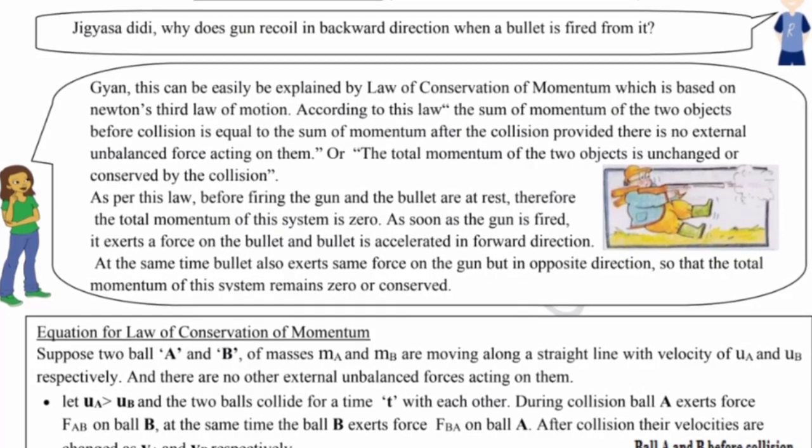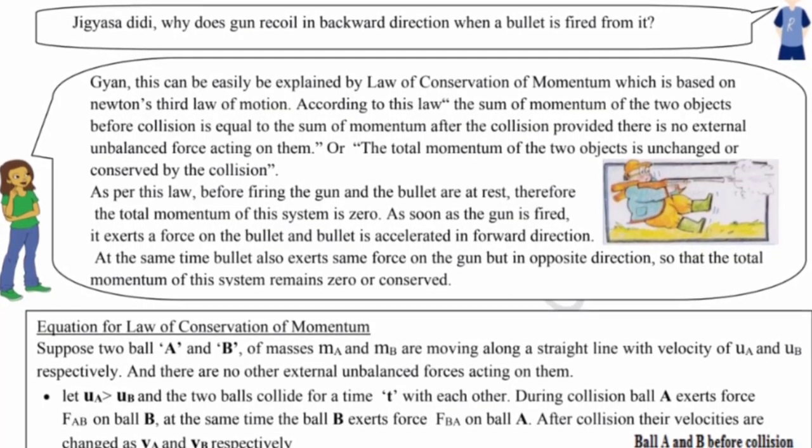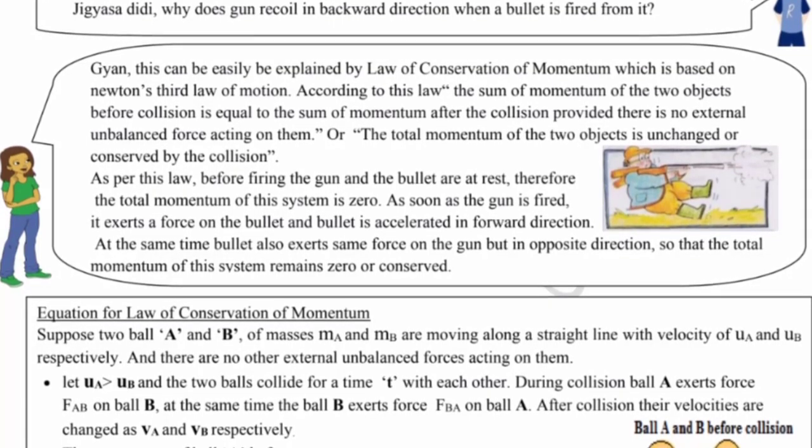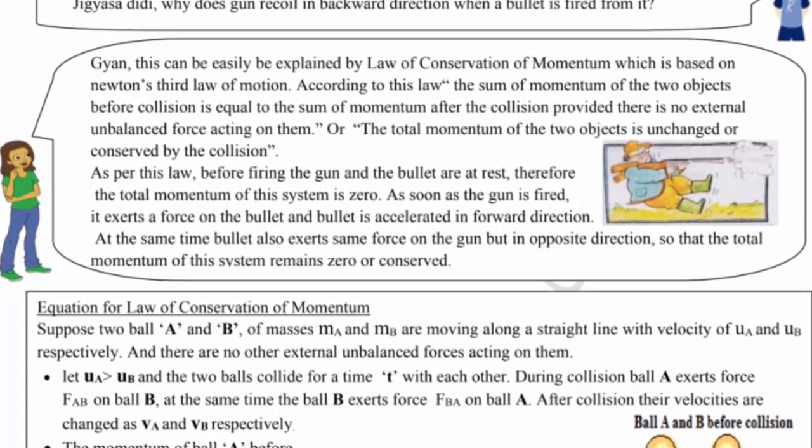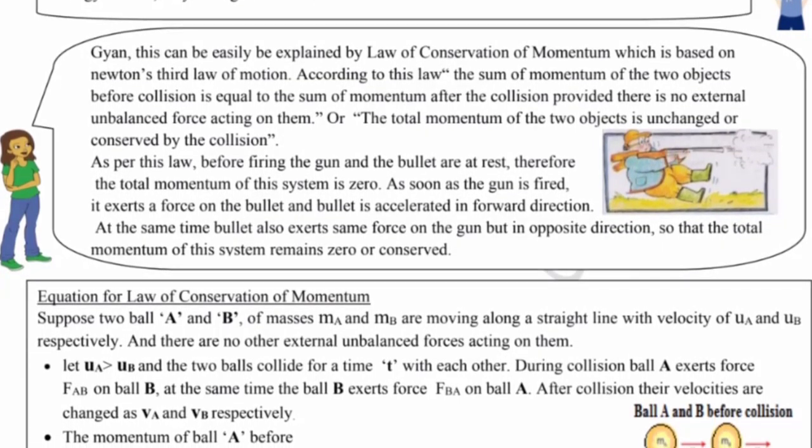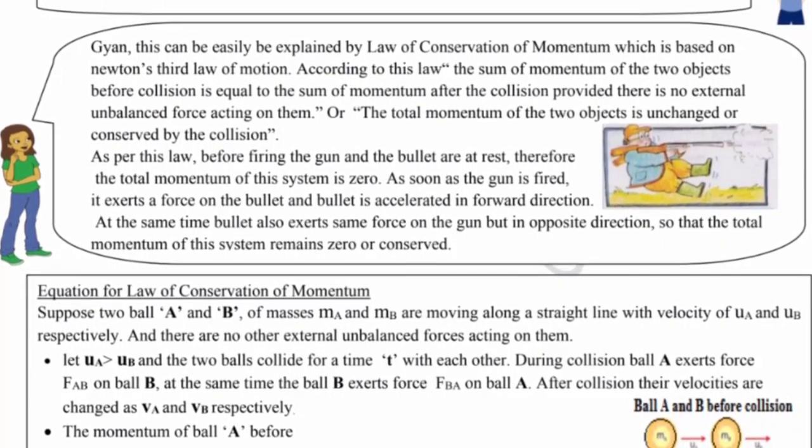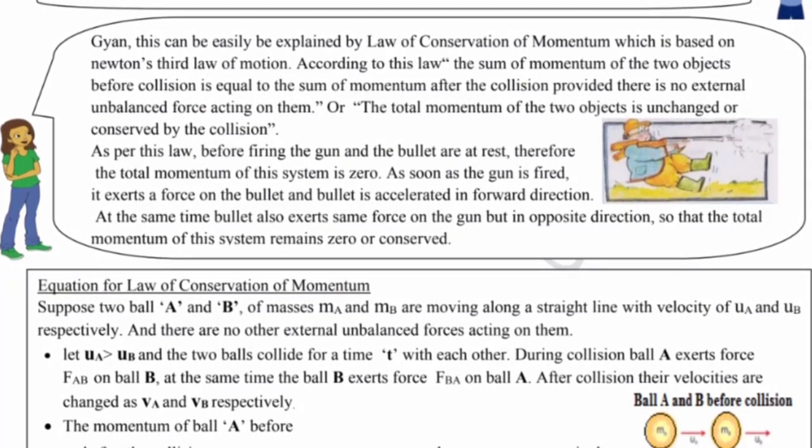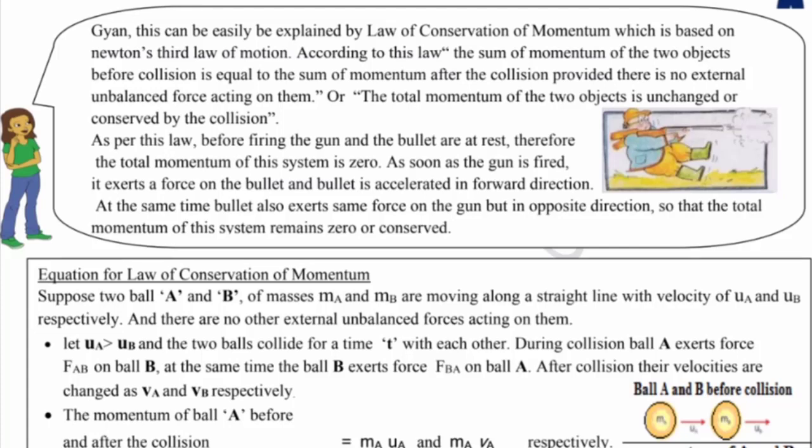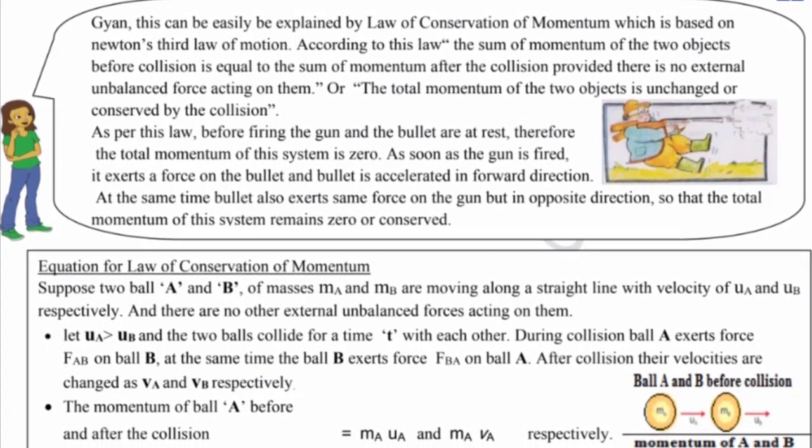As per this law, before firing the gun and the bullet are at rest, therefore the total momentum of the system is zero. As soon as the gun is fired, it exerts a force on the bullet and bullet is accelerated in forward direction. At the same time, bullet also exerts same force on the gun but in opposite direction.